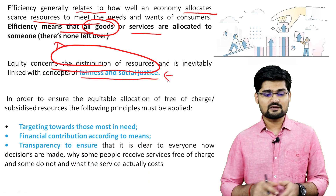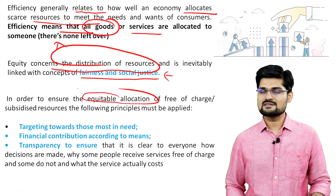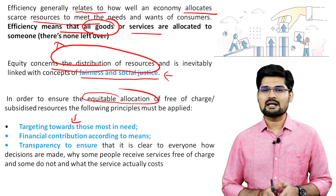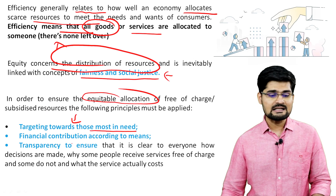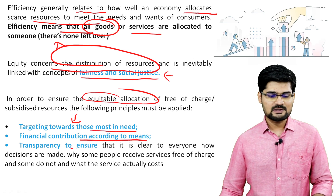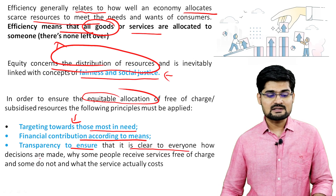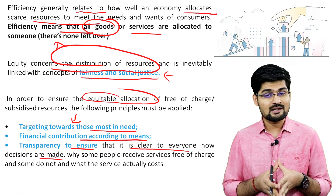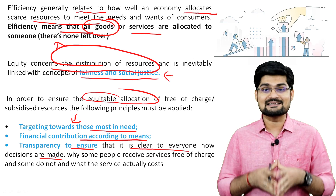Equity concerns the distribution of resources in terms of social justice and fairness. In order to ensure equitable allocation, certain principles must be applied: targeting towards those most in need, financial contribution according to means, and transparency to ensure it is clear to everyone how decisions are made — so that nobody feels cheated or feels injustice. These are important principles in equity.